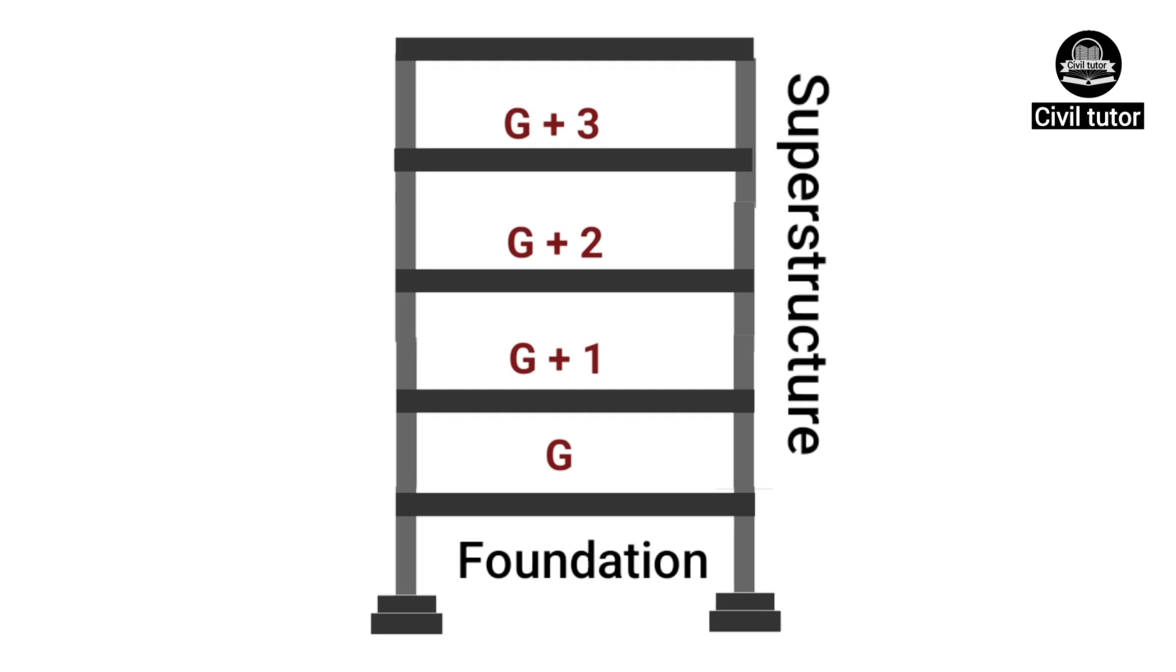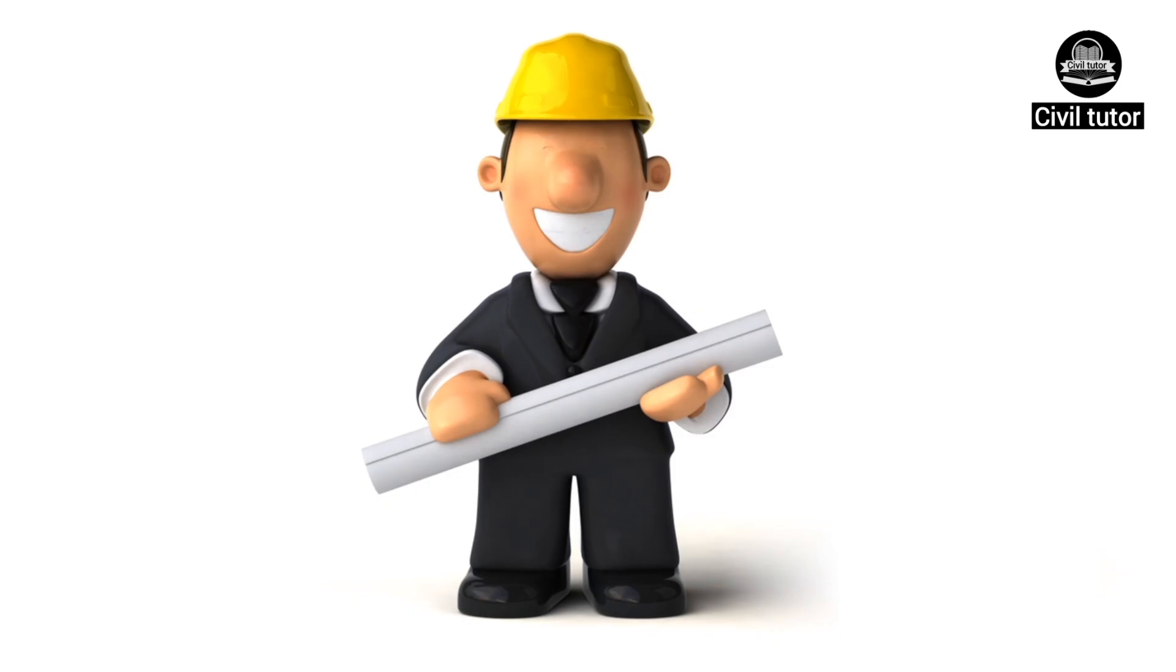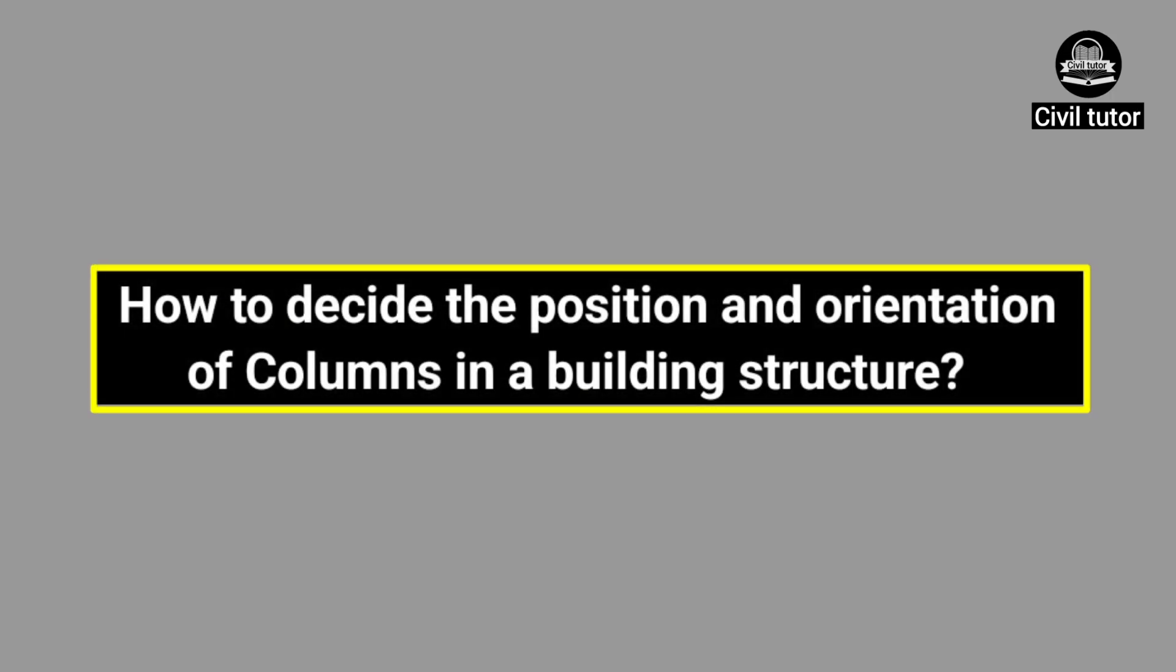Overall, the basic principle of deciding the layout of these components is the transfer of loads from the superstructure to the foundation along the shortest possible path. In this lecture, I am going to discuss how to decide the position and orientation of columns in a building structure.